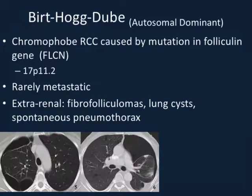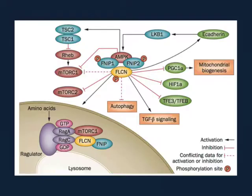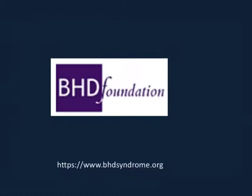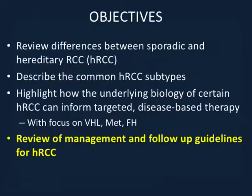Finally, one slide on Birt-Hogg-Dubé. It's well-characterized as a cause of hereditary chromophobe RCC caused by distinct mutations in the folliculin gene on chromosome 17. It tends to be slower-growing and is rarely metastatic. Its extra-renal symptoms are important exam fodder: fibrofolliculomas, lung cysts, and spontaneous pneumothorax — autosomal dominant as well. There are commonalities in the underlying signaling pathways: like VHL, folliculin may have an inhibitory effect on HIF-1, so mutations in folliculin allow HIF-1 to continue to drive downstream disease. The Birt-Hogg-Dubé Foundation has a nice patient-facing website describing what the disease is and what life is like — which isn't so bad, it seems.